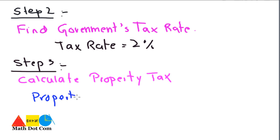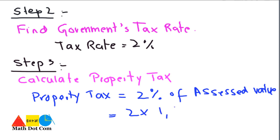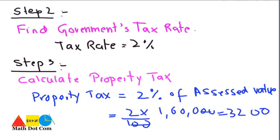Step 3 is to calculate the property tax. The formula is: Property Tax = Tax Rate × Assessed Value. With a tax rate of 2% and an assessed value of 1,60,000, the property tax is 2% of 1,60,000, which equals (2 × 1,60,000) / 100 = 3,200. That is how you calculate the property tax.